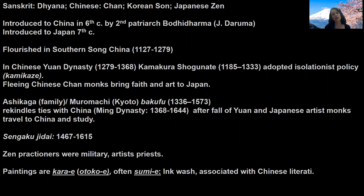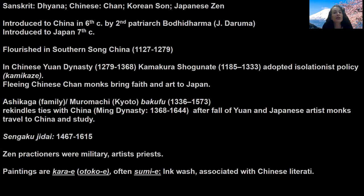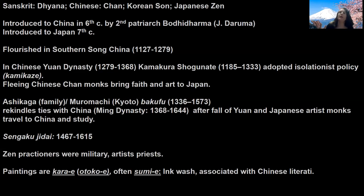This school of Buddhism also traveled to Korea, where it is known as Son Buddhism, and to Japan, where it is known as Zen Buddhism. Zen is more popular in Japan than in Korea and even in China, where it has been eclipsed — both in practice and in its arts. The figure Bodhidharma in Japan has a much shorter name: he's known as Daruma. Zen is introduced to Japan from China in the 7th century, but doesn't really take off until the Kamakura period in the 13th century.